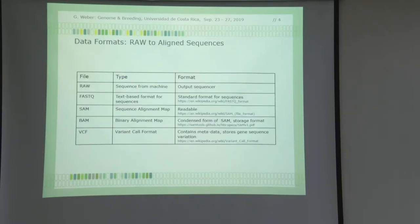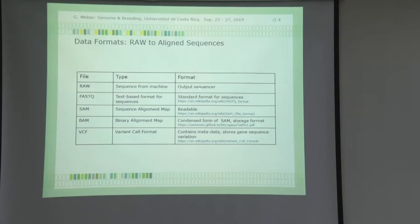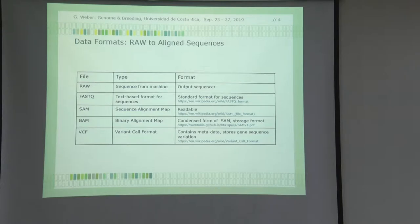You have to remember a number of different formats — these are the general formats used in this type of research. The raw sequence, designated as 'raw,' is what actually comes out of the sequencer, and you can't really use it as-is. Then you go to FastQ, which is a text-based format. I mention here a webpage where you can look it up. It's a standard format you work with in NCBI, and FastQ and FastA are essentially the same.